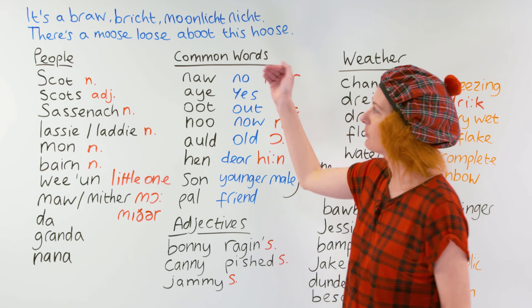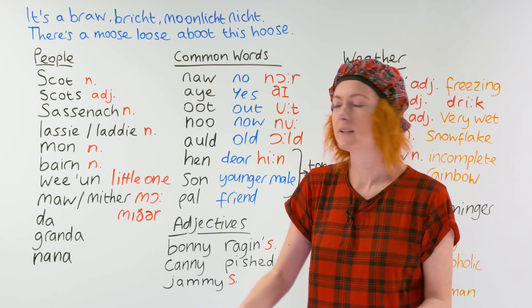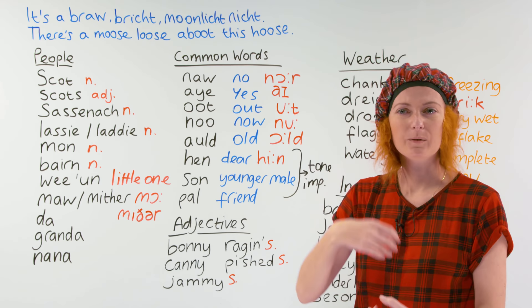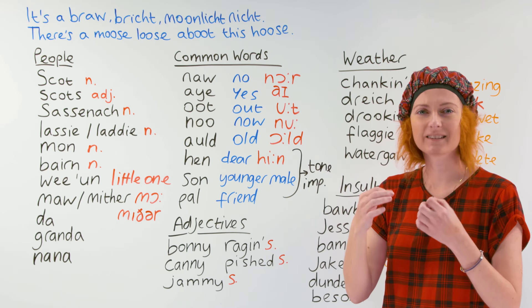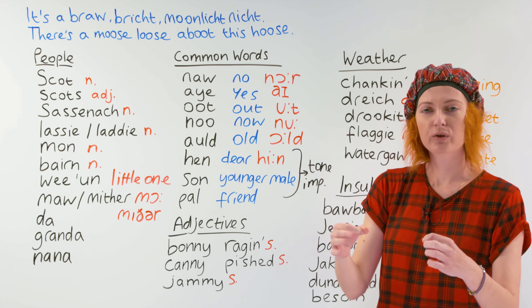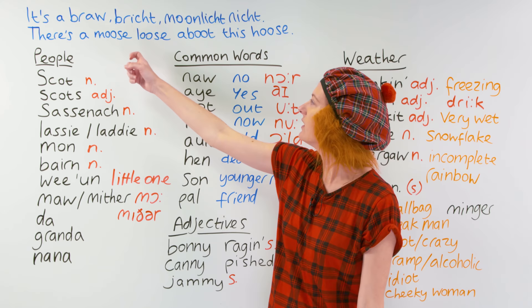Let's begin with some Scottish-isms. I don't think that people in Scotland say this every day. A Scottish-ism is a phrase that brings to life the Scottish dialect, but people don't say it. Here we go: 'It's a braw bricht munlicht nicht.' Can you say that with me? 'It's a braw bricht munlicht nicht.' And the second one: 'There's a moose loose aboot this hoose.' Say it with me: 'There's a moose loose aboot this hoose.'